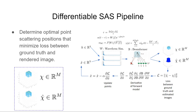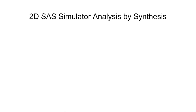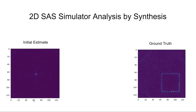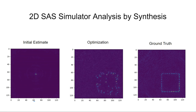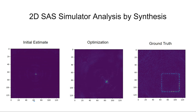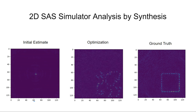The completed optimization yields a close estimate of the point scatterers that form the image. We illustrate a 2D example of this optimization here. Given a beamformed SAS image of points that form a square and an initial guess of points centered in the middle of the scene, we performed the analysis by synthesis optimization to recover the point positions. Currently, we are extending this optimization procedure to solve ill-posed problems such as recovering 3D point positions from 2D beamformed scenes. While these results are shown with simulated data, we are working towards validating these results on a real in-air circular SAS imaging system in our lab. Thank you.